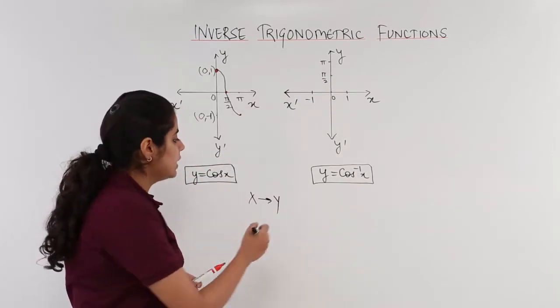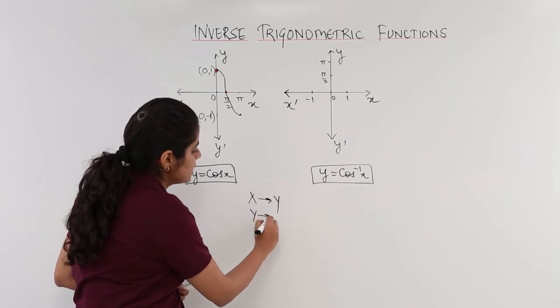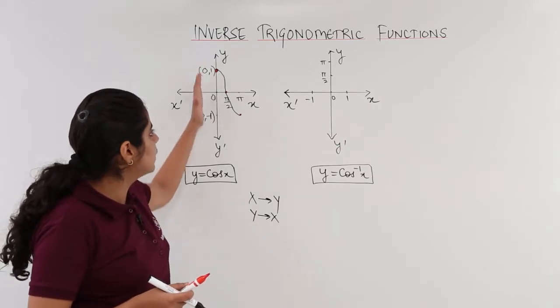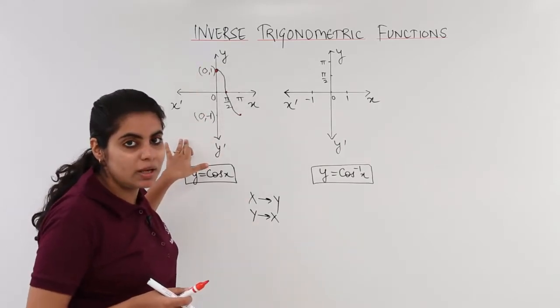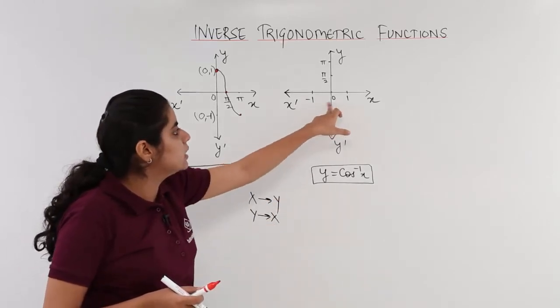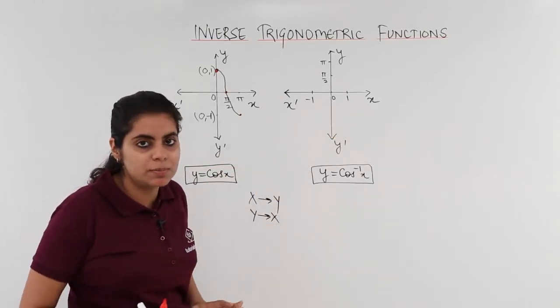Next step is make y axis as your x axis. Where is y axis? Y axis is the vertical one. 0, minus 1 and 1. It becomes your x axis. x axis is 0, minus 1 and 1. Two steps done.